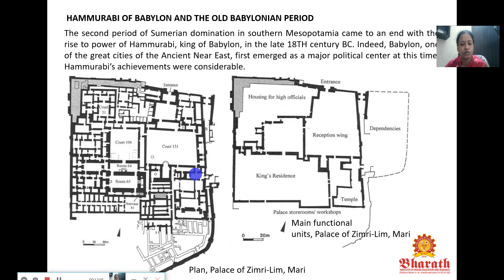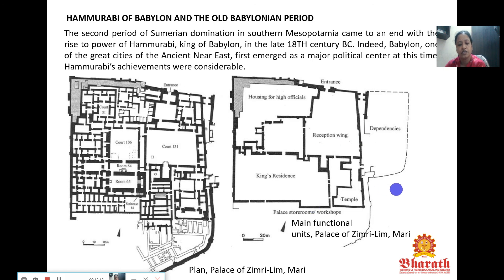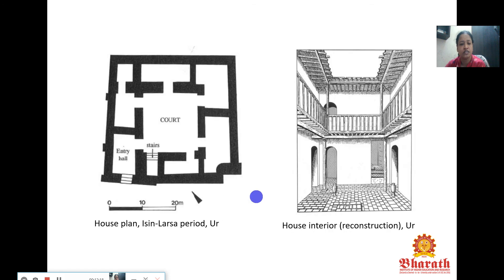The Sumerians ended and during the 19th century BC, the Babylonian civilization started. That is the city of Mari — you have the plan of the palace complex.